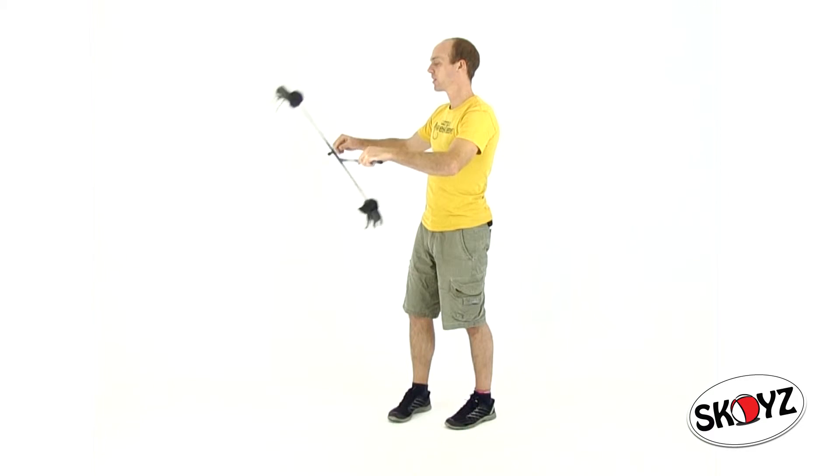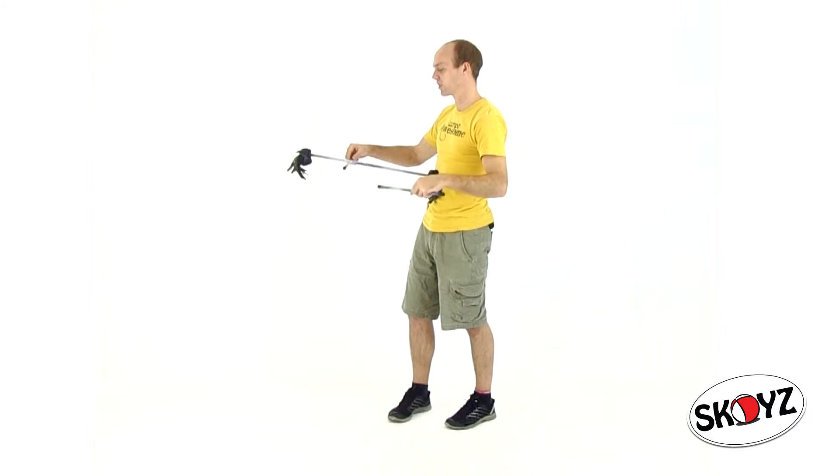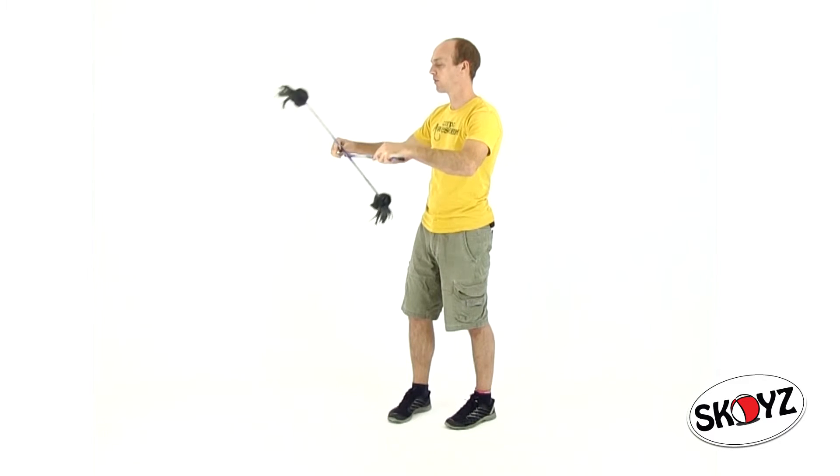Now, if you remember from the tick tock lesson, I said that the closer to the center you touch it, the slower it's going to turn. If you touch it close to the end, it turns really quick. And if you touch it towards the center, it goes really slow. So try to touch it very close to the center as you're going around because that will slow it down.